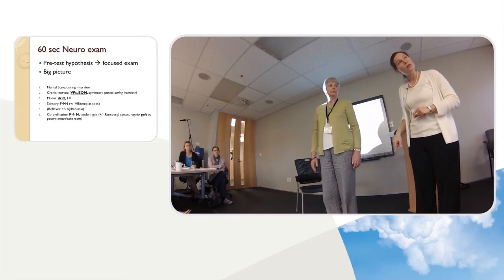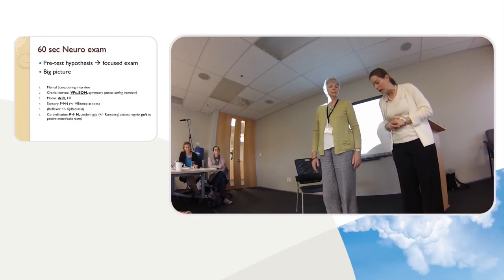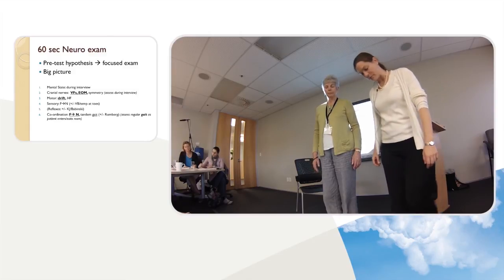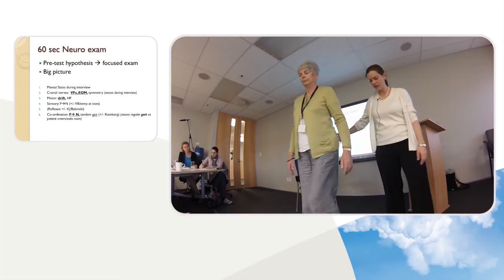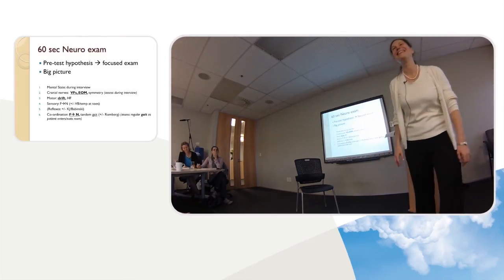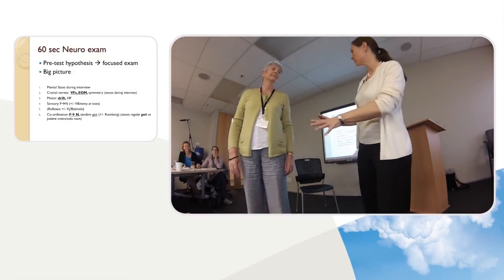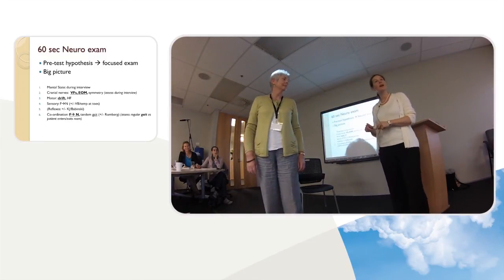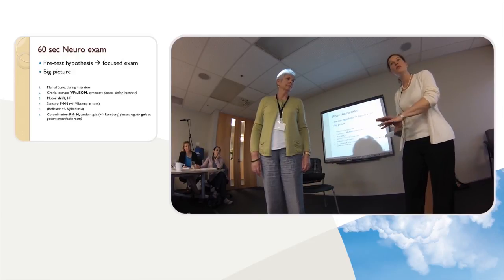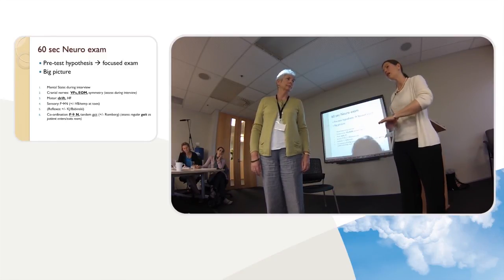Usually I'll assess gait as the patient walks in or walks out, sometimes following them down the hallway to see things like arm swing in Parkinson's. If I'm interested in the gait, I'll have them do heel-to-toe walking or tandem gait. A little unsteady there — that's borderline. If I saw that and there was a balance issue, I might have her take off her shoes and get into more detail with vibration testing of the feet. But if that's not her presenting complaint, I'd ignore it.